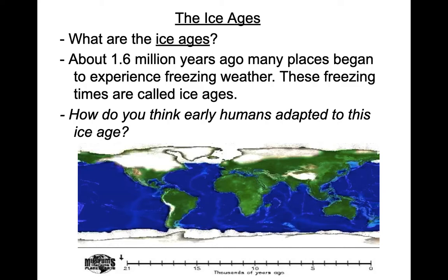How did we adapt to these new environments? We made new tools for the new environments we were in. We especially wore new clothing made out of animal furs and other materials. We also made our own shelters out of those animal furs to keep us warm in these northern environments. That's really the most important thing — because we don't have much fur ourselves, you have to adjust and make tools to be able to adapt.